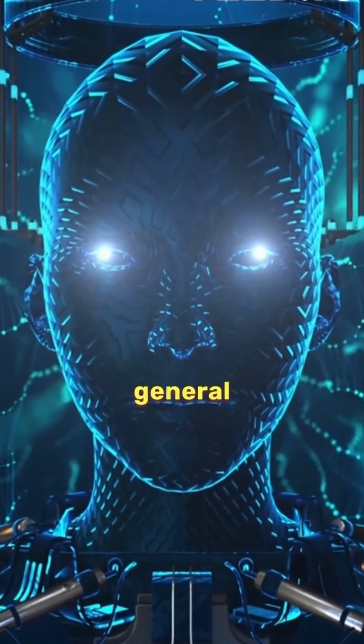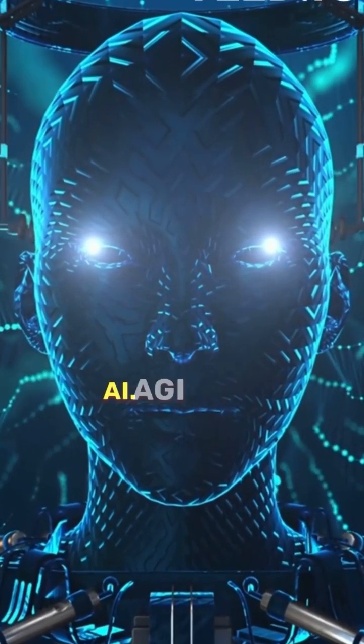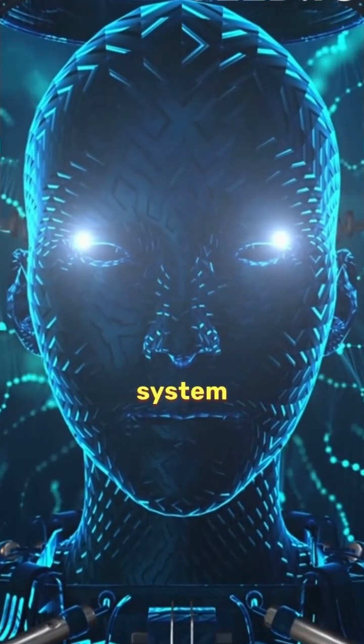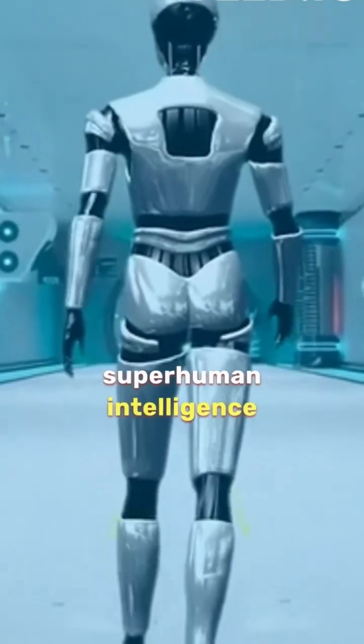AGI stands for Artificial General Intelligence, which is another term for general AI. AGI is the hypothetical AI system that would have human-like or superhuman intelligence and capabilities.